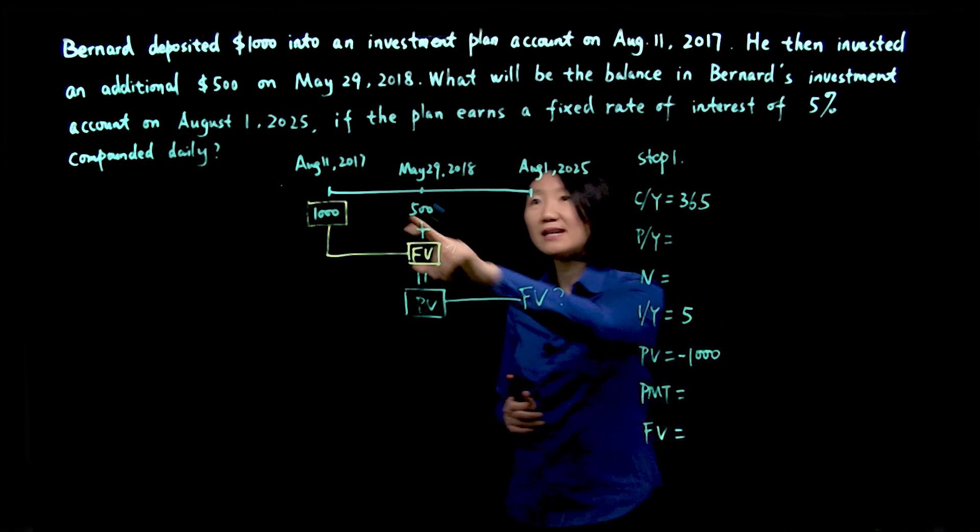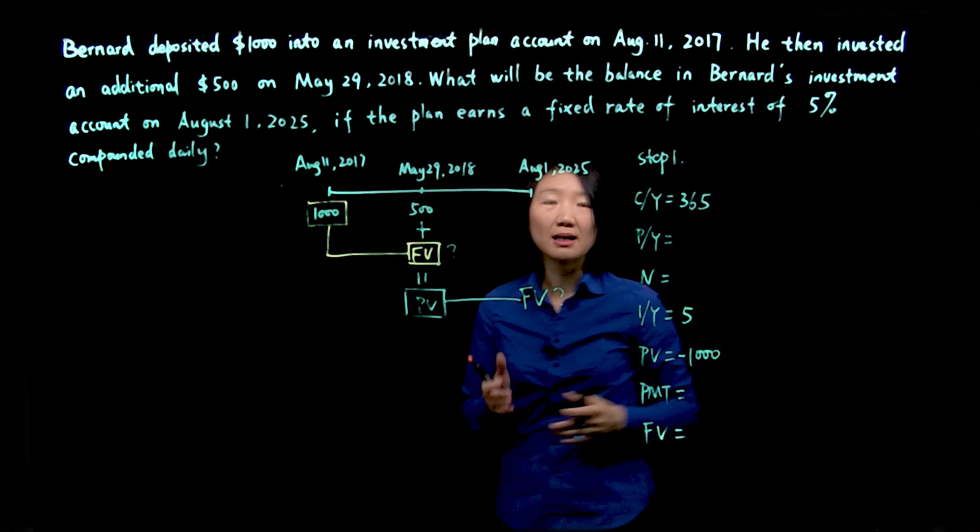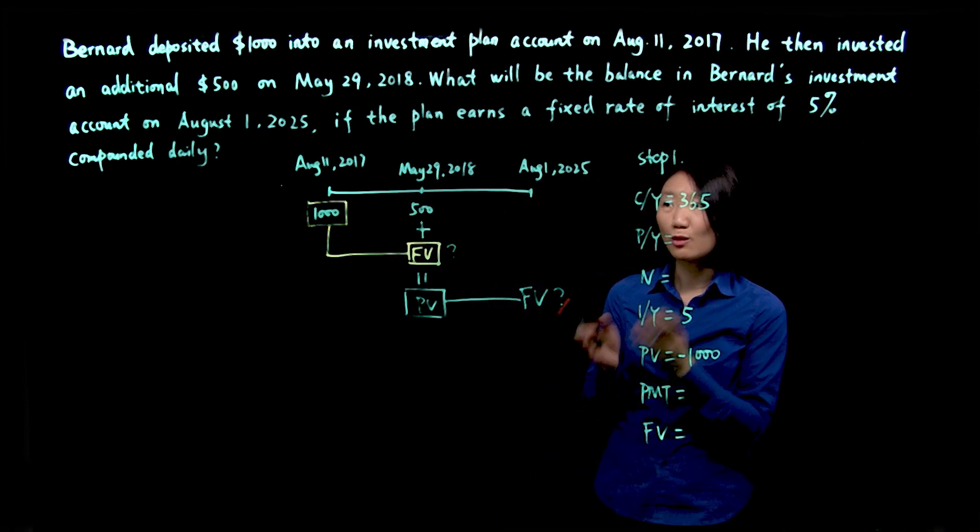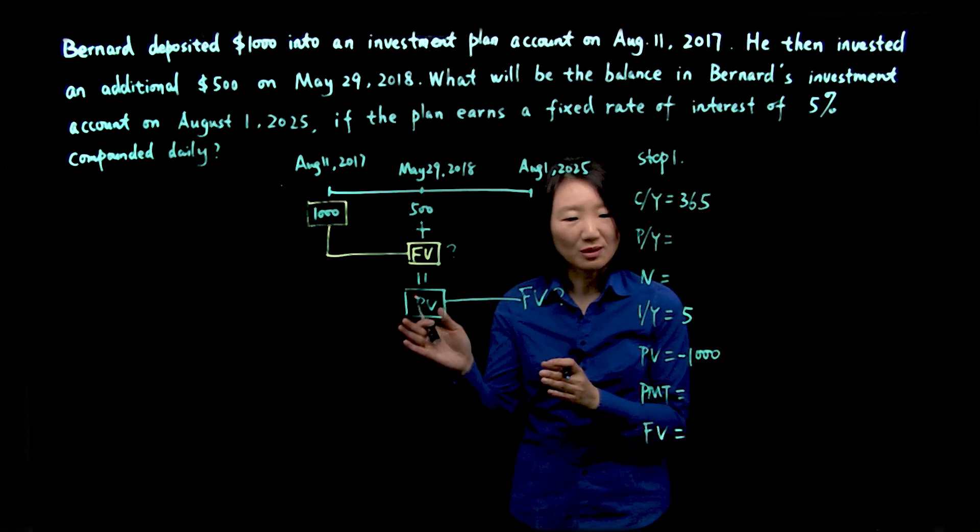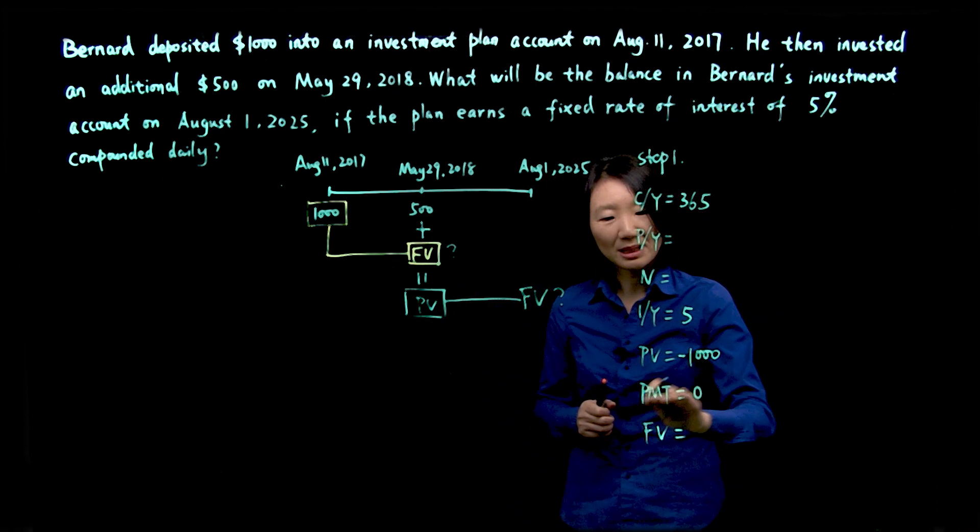Periodic payment. In this case, we do not have any monthly payments, quarterly payments, or daily investment. Periodic payment is zero.